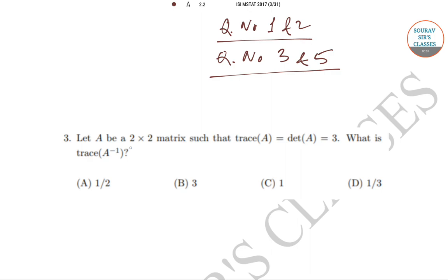In question number 3, it has been said that let A be a 2×2 matrix — so it is a square matrix — such that the trace of A is equal to the determinant of A, and that is equal to 3. It has been asked: what is the value of trace of A inverse? So basically the matrix A is invertible.